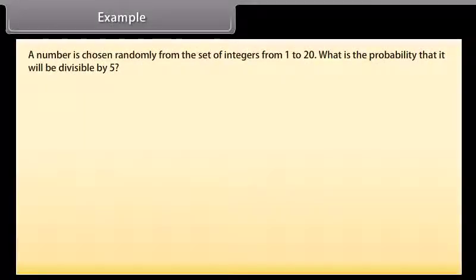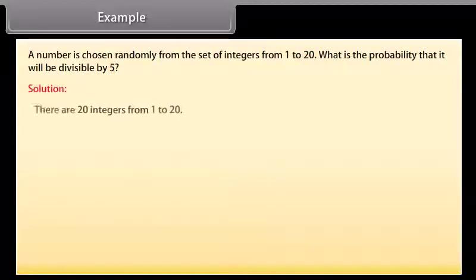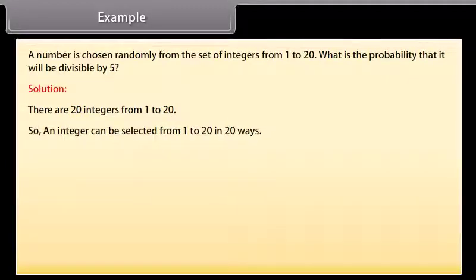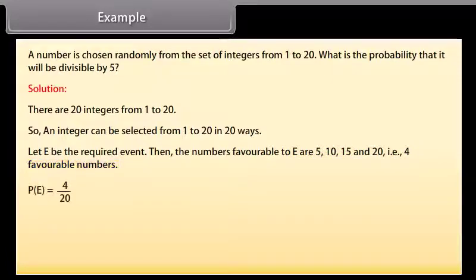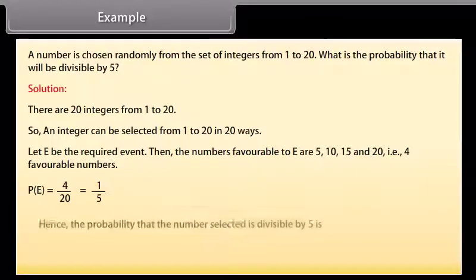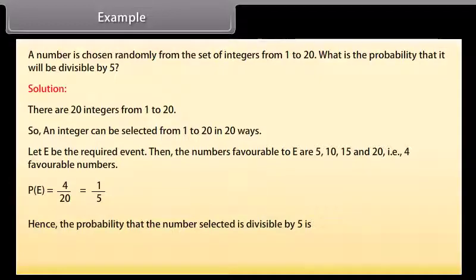Example: A number is chosen randomly from the set of integers from 1 to 20. What is the probability that it will be divisible by 5? Solution: There are 20 integers from 1 to 20, so an integer can be selected in 20 ways. Let E be the required event. The numbers favourable to E are 5, 10, 15, and 20 — that is, 4 favourable numbers. P(E) = 4/20 = 1/5. Hence, the probability that the number selected is divisible by 5 is 1/5.